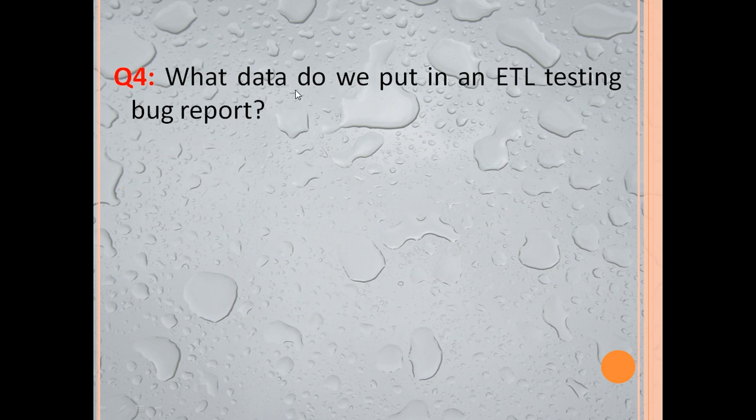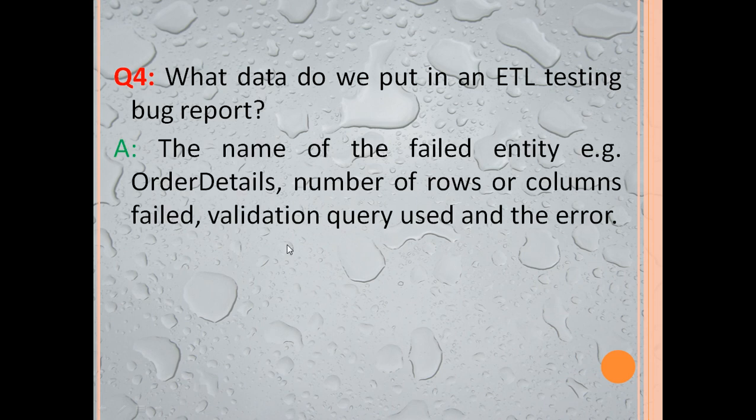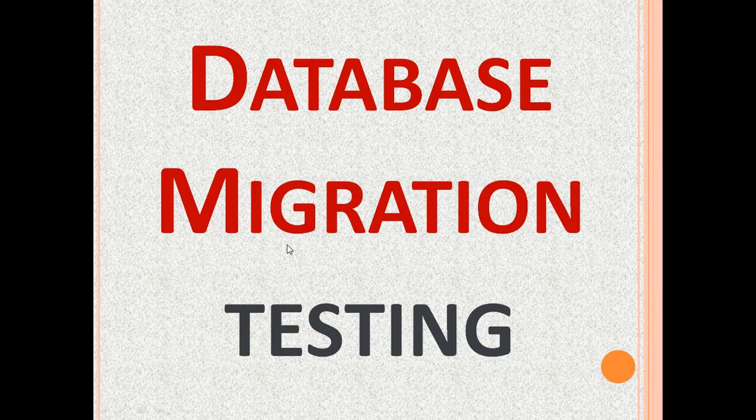What data do we put in an ETL testing bug report? The important data includes the name of the failed entity — for example, order details — the total number of rows and columns that failed, the validation query that we used, and the error number and description. Database migration testing is a type of database testing. In this ETL testing tutorial for beginners, we learned what DB migration is, the database testing scope, the database testing approach, what to put in every ETL testing bug report, and some data testing problems and solutions.